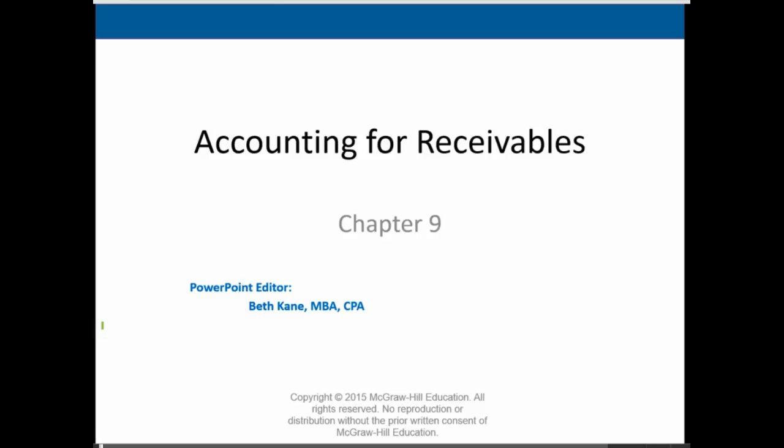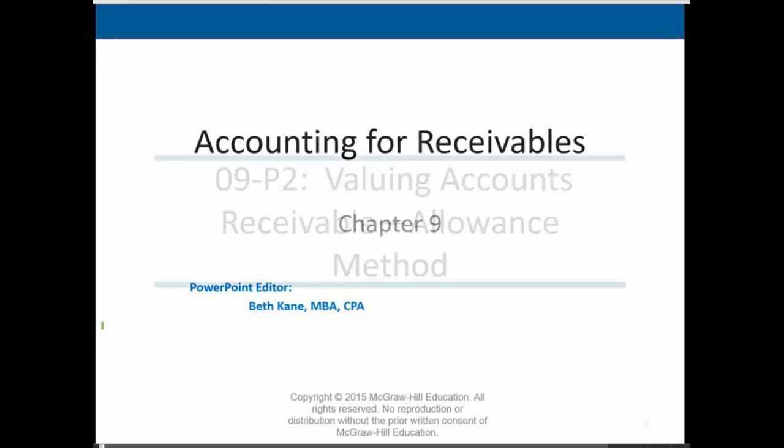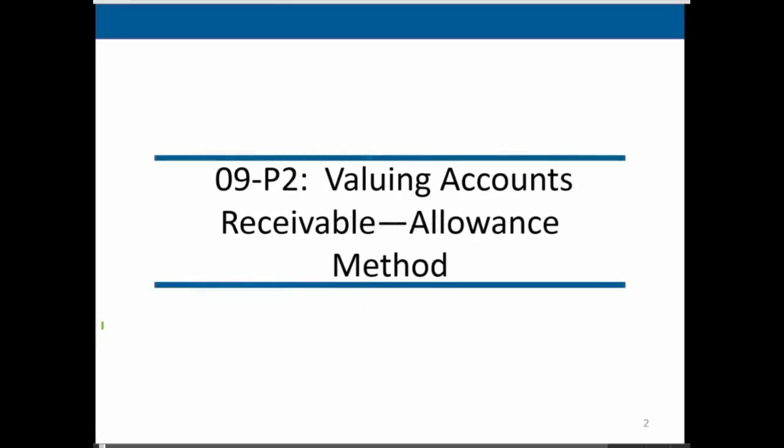Hello, this is Bob Steele. In this lecture we will continue on Chapter 9, Accounts Receivable, and we will now be talking about the allowance method. We just took a look at the direct write-off method, which is an easier method, but it does not adhere to the matching principle as easily as the allowance method.